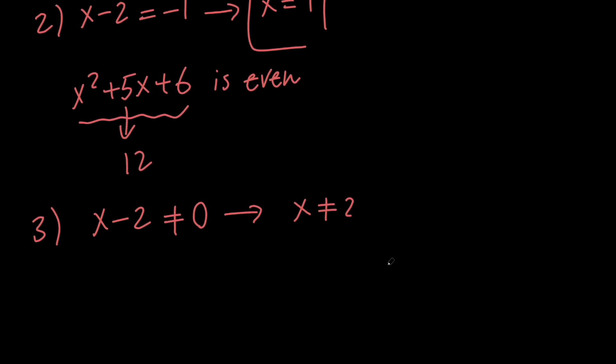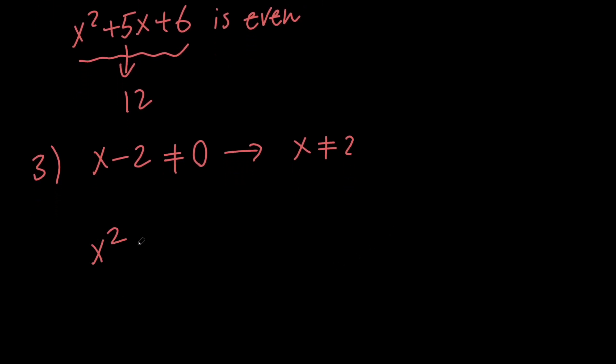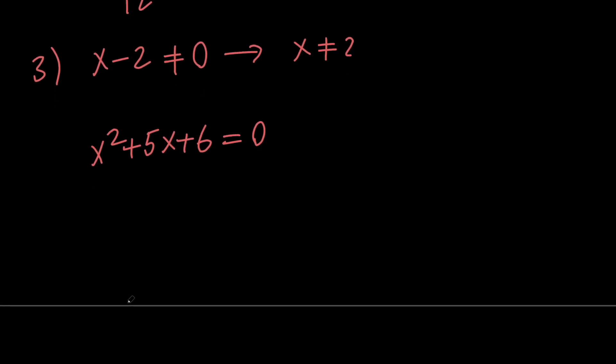But at the same time we want the power which is x squared plus 5x plus 6 to be 0. This is a quadratic equation so we can solve this using different methods. I'm going to go ahead and use the factoring method and I'm going to factor the left hand side into x plus 2 times x plus 3.